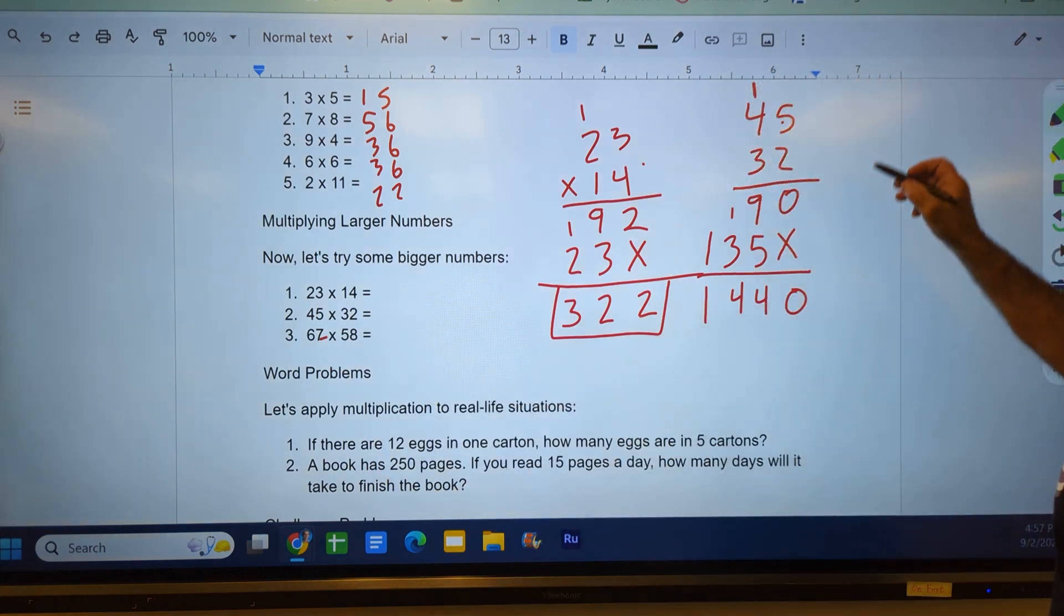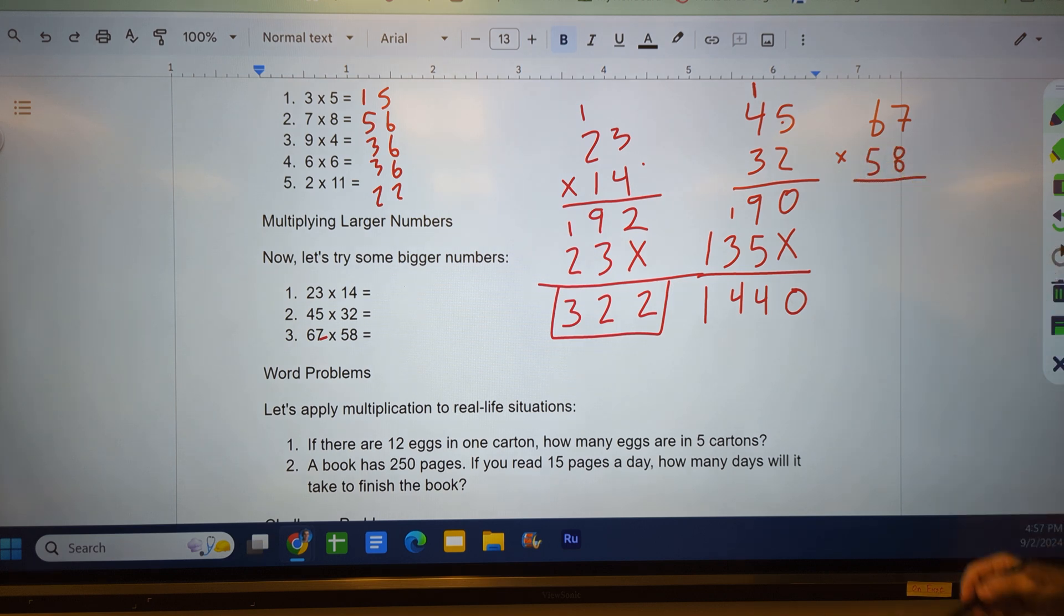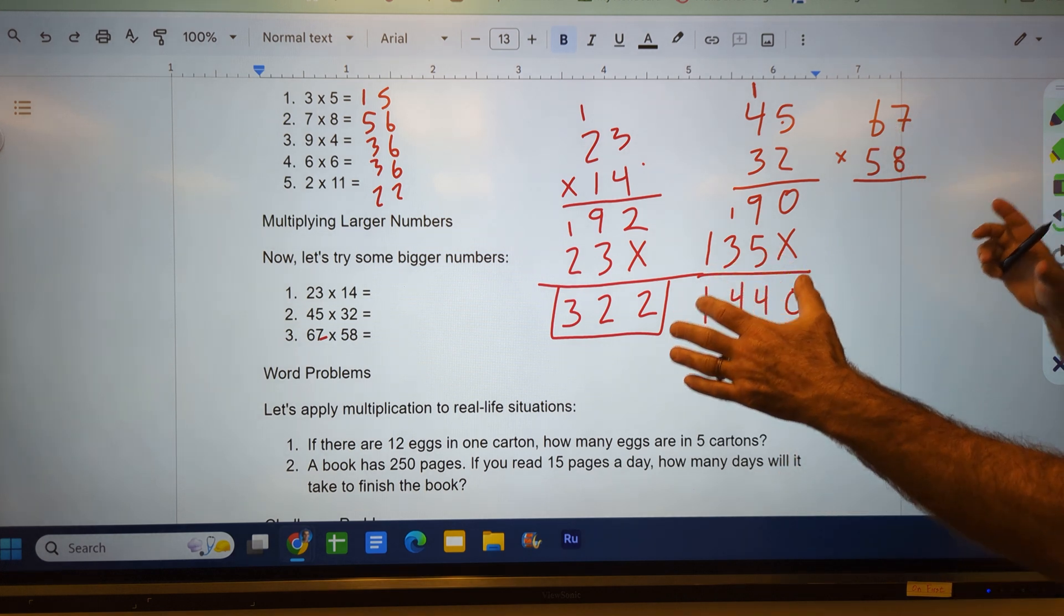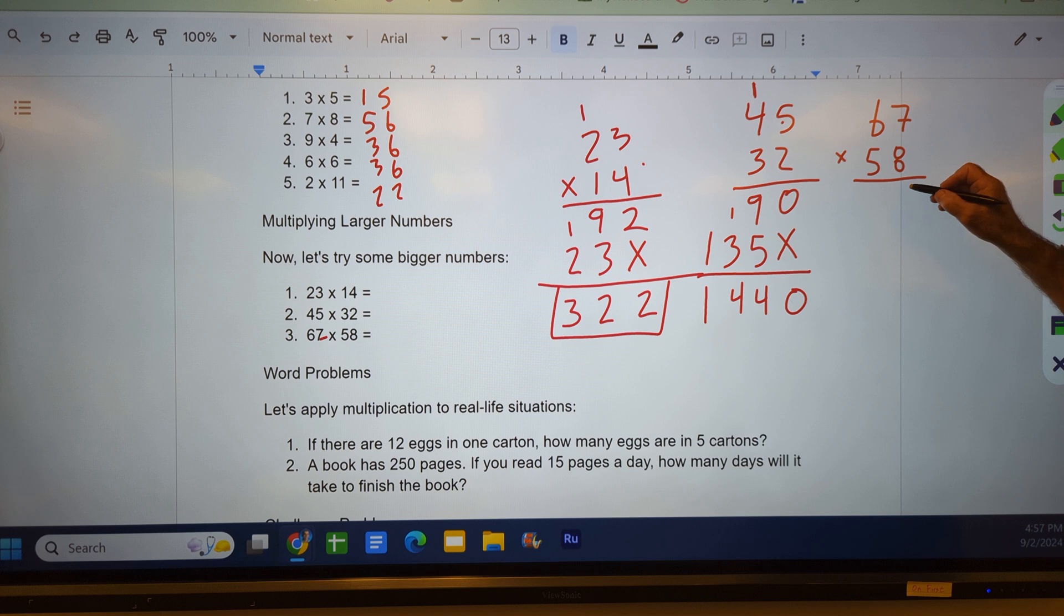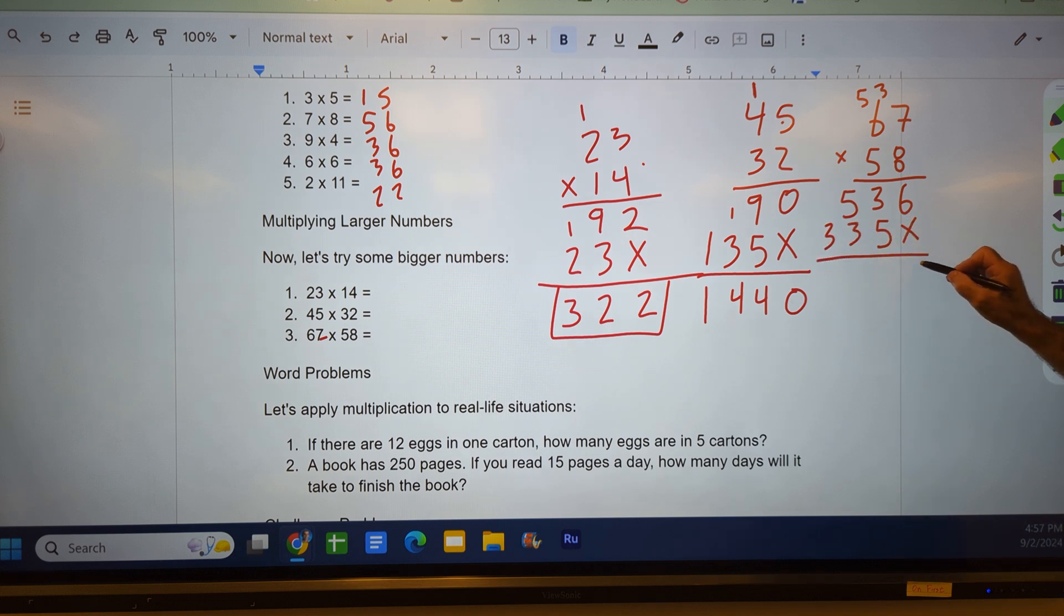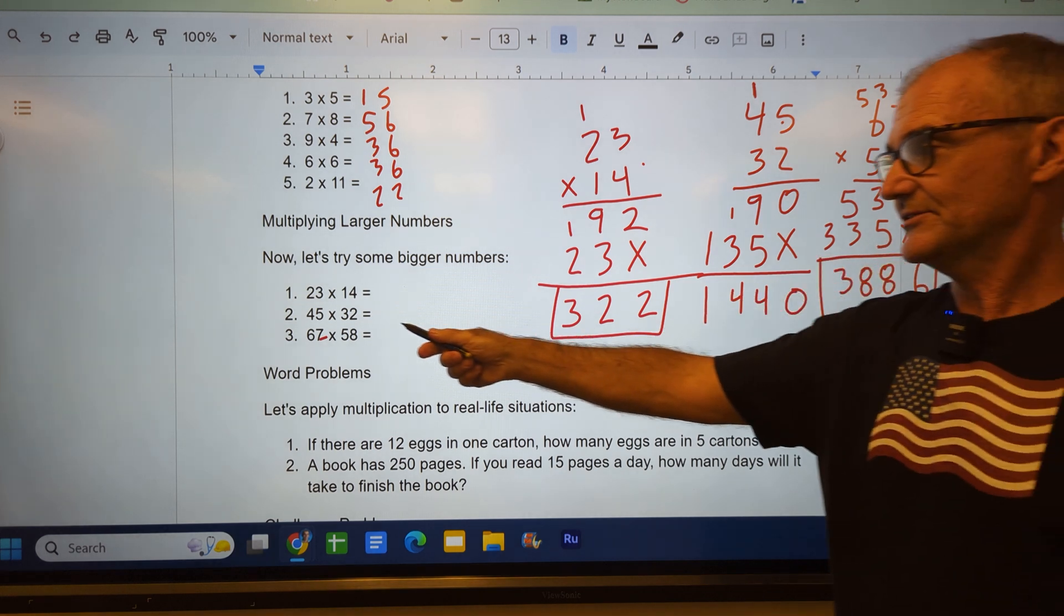Last problem right here: 67 times 58. Put them right below each other. If I round this to 60 down to 60, like in the 3600 range. 8 times 7 is 56, carry the 5. 48 plus 5 is 53. There's my placeholder. 5 times 7 is 35, carry the 3. 5 times 6 is 30, plus that 3 is 33. Add straight down: 6, 8, 8, and 3. Here's my answer for that third one right there.